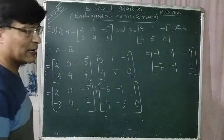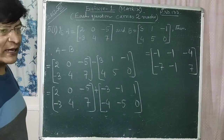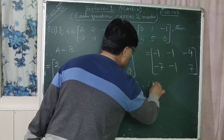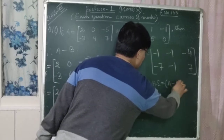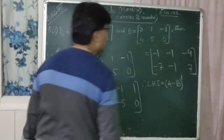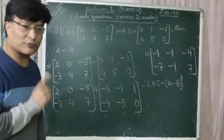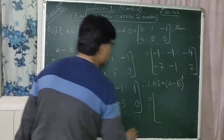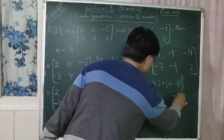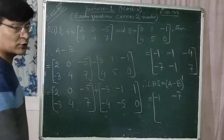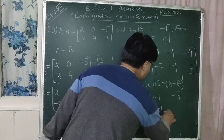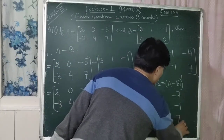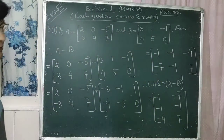LHS is equal to (A-B) dash, that means you have to get the transpose of the matrix A minus B. The first column becomes the first row, the second column becomes the second row, and the third column becomes the third row. So LHS is [-1,-7; -1,-1; -4,7].